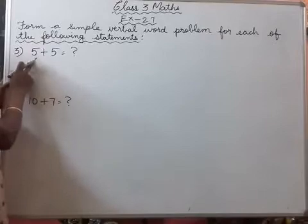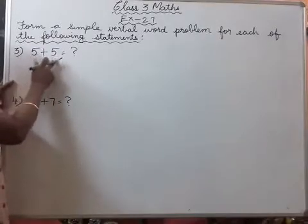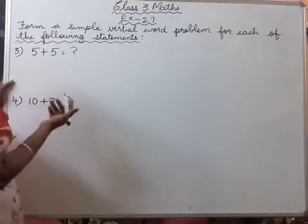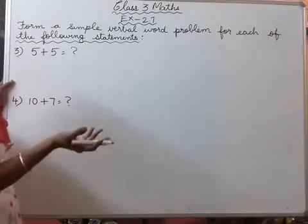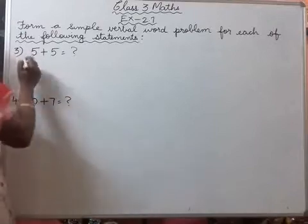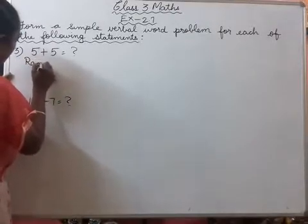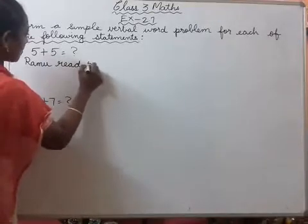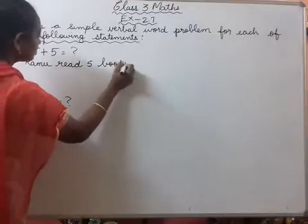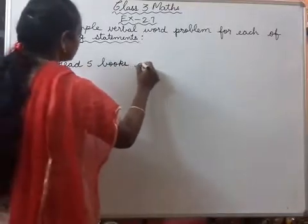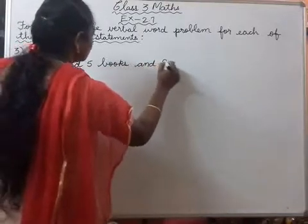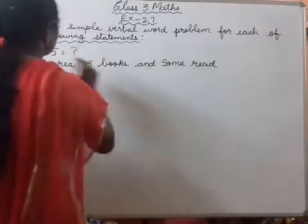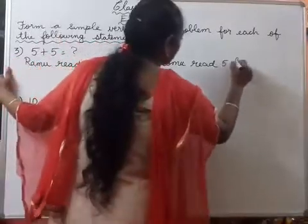Next you have to frame word problem for 5 plus 5 equals question mark. Okay, so what type of questions? You can frame your own questions also. I am framing here. So, Ramu read 5 books and Somu read 5 books.